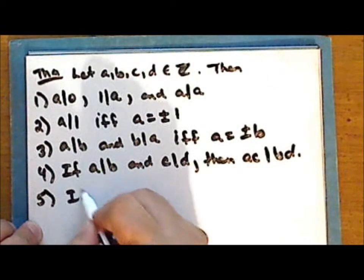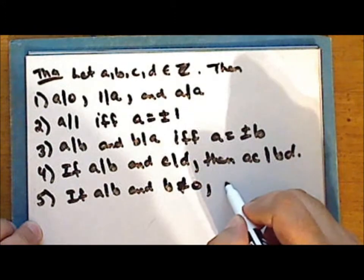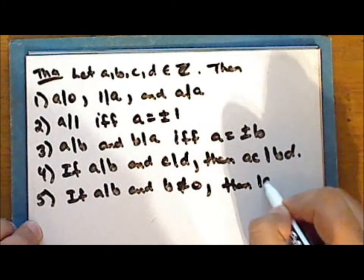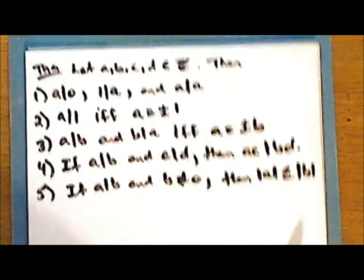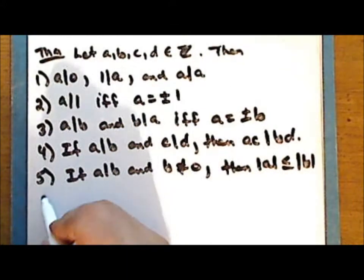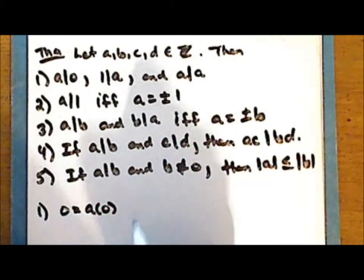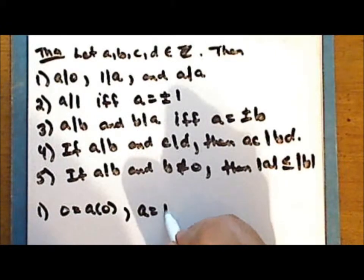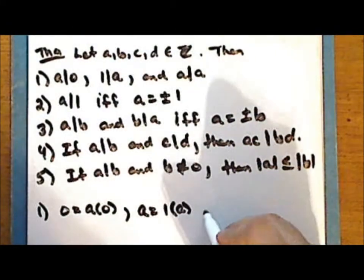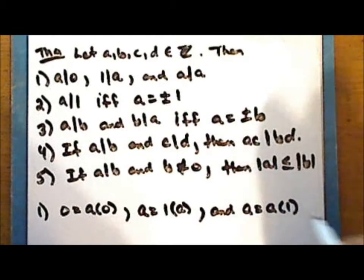Five: if a divides b and b is not zero, then the absolute value of a is less than or equal to the absolute value of b. The first statement is very easy to prove. a divides zero for any integer a, since zero is expressible as an integer multiple of a. One divides a, since a is expressible as an integer multiple of one. And a divides itself, since it is expressible as an integer multiple of itself.